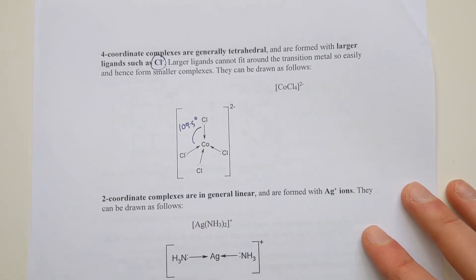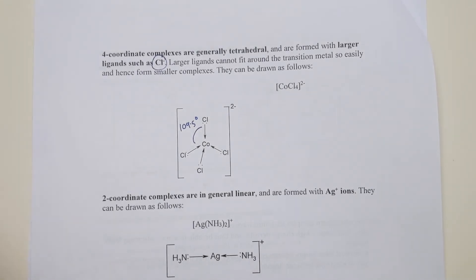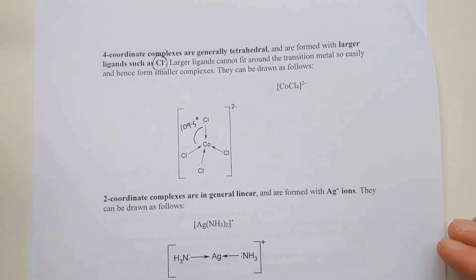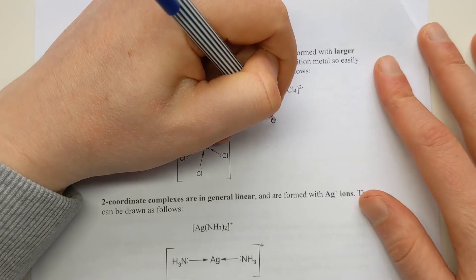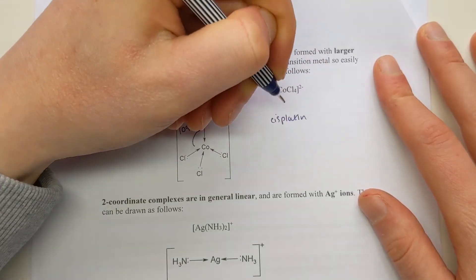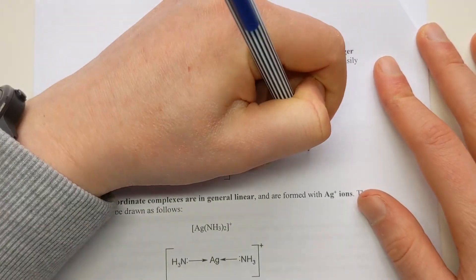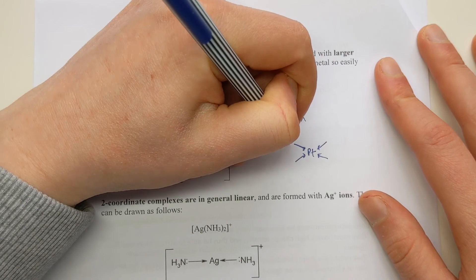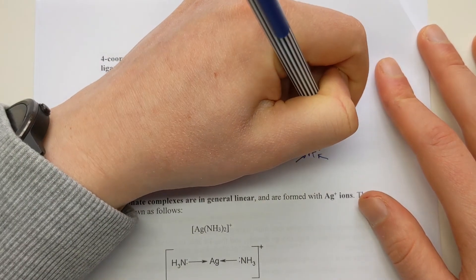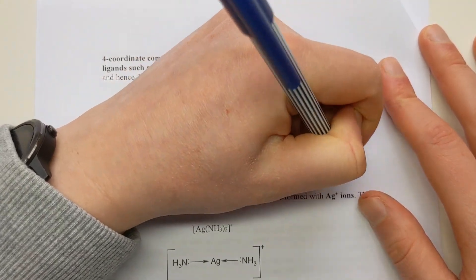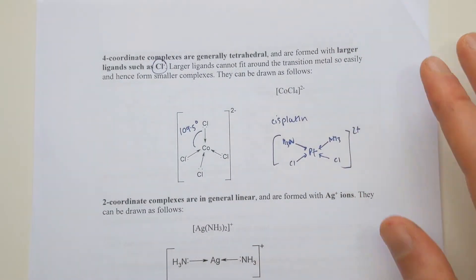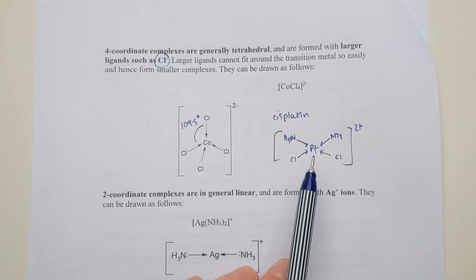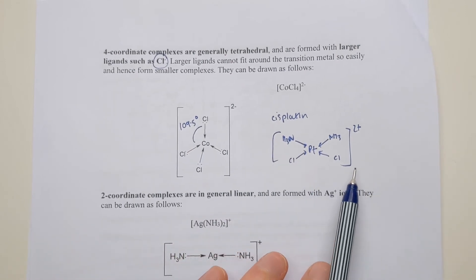There is one exception to that, however. You will find one example of a complex which has got four coordinate bonds but is square planar. That would be cisplatin, which we looked at in medicinal chemistry. It's got this shape to it. So clearly you've got a coordination number of four there, but they're not in a tetrahedral configuration. They actually are in a flat configuration, square planar, with 90 degrees in between.